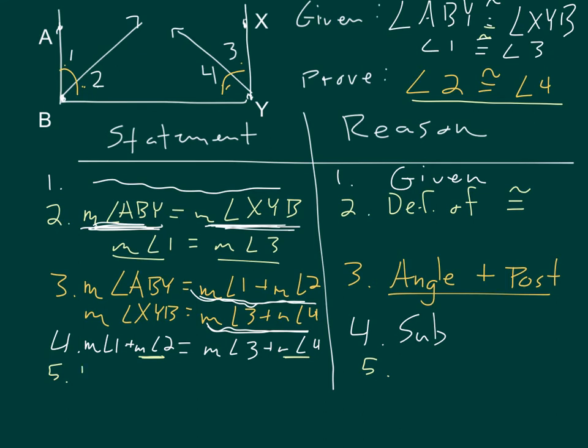So, instead of writing measure of angle 1, I'm going to write the measure of angle 3. They're the same measurements, so I can substitute that in. I'm going to keep the rest of the equation the same.